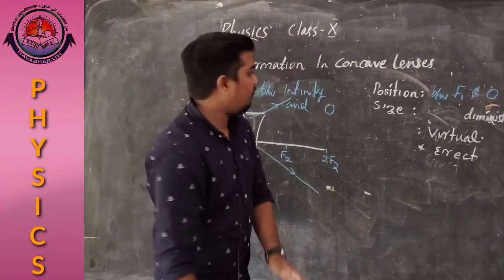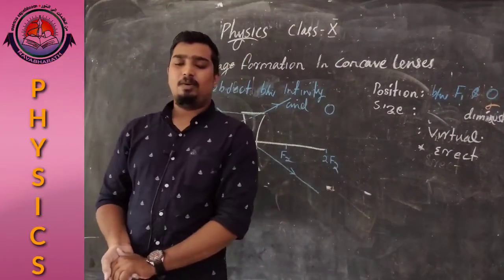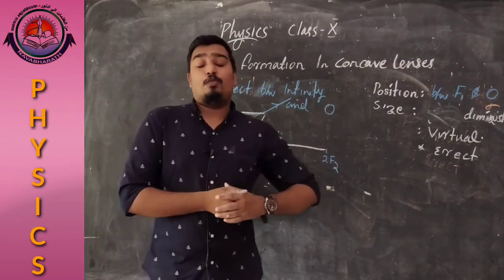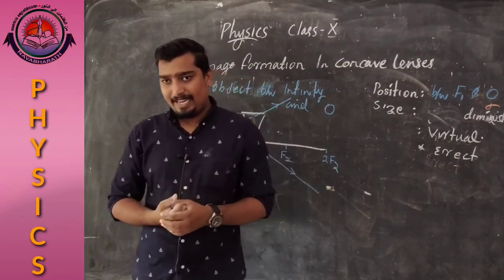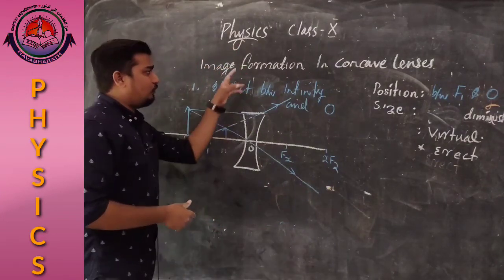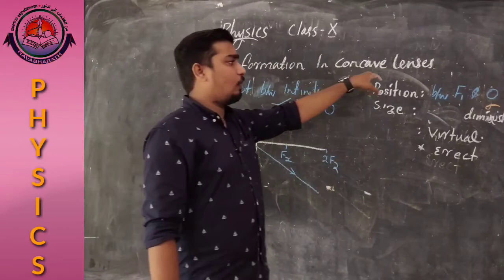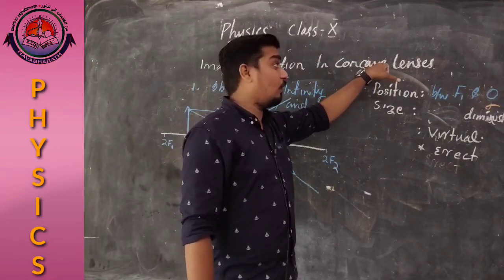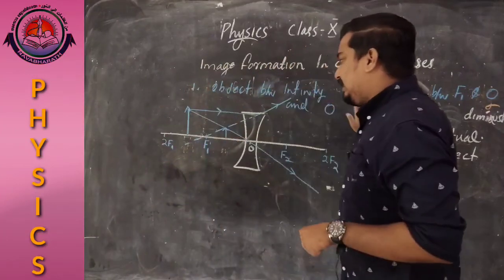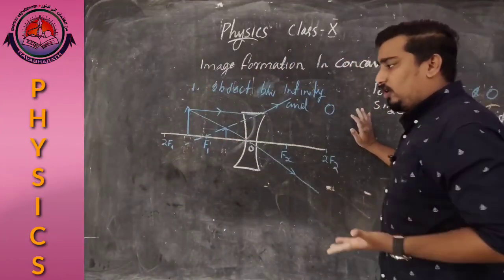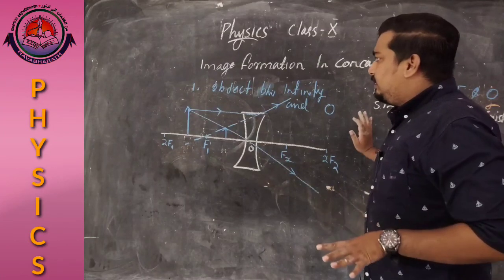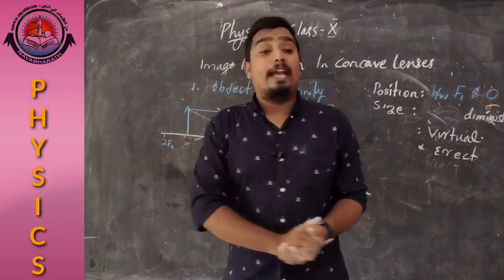Today we discussed image formation in lenses using ray diagrams — first, image formation in a convex lens, and second, image formation in a concave lens. I hope you all understood this session and how to draw a ray diagram. Thank you.